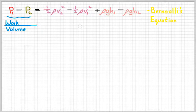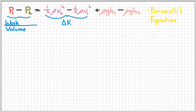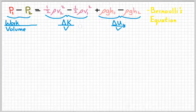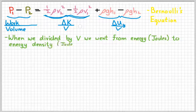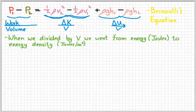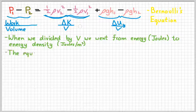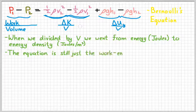This term right here, the P1 minus P2, basically is a way of writing work over volume. So remember the work part of that was the pressure times the volume, or the difference in the pressure times the volume rather. And so we just divide it by V to get that, so really that's a work term. This whole thing is a kinetic energy change over a volume, and this part is a potential energy change over a volume. So basically what we have here is just a long statement of the work energy theorem. When we divided everything by V, we just went from energy, which is measured in joules, to energy density, which can be measured in joules per meter cubed. And so instead of saying joules of energy, you can say joules per meter cubed of energy. So everything still works out the same, we're just working with a slightly different unit.